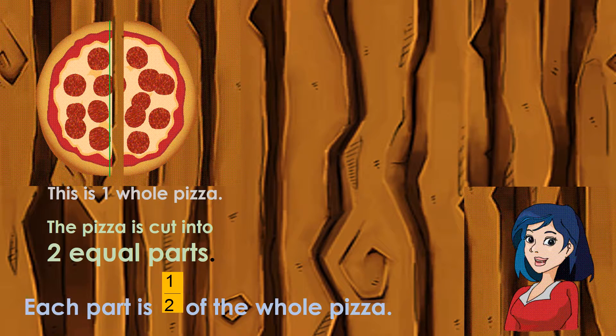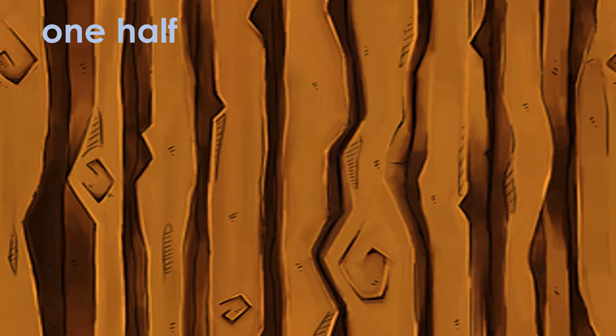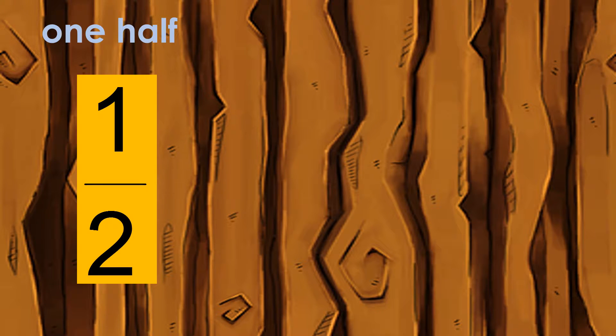Each part is one half of the whole. Every fraction has two parts: a top number and a bottom number. In math terms, these are called the numerator and the denominator.